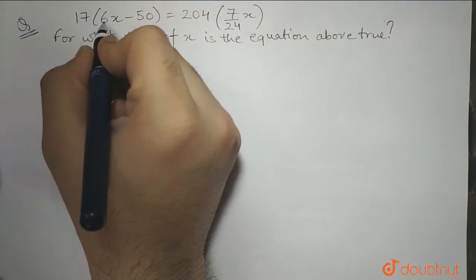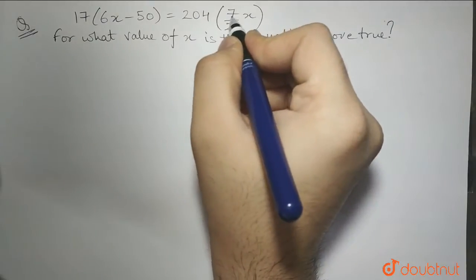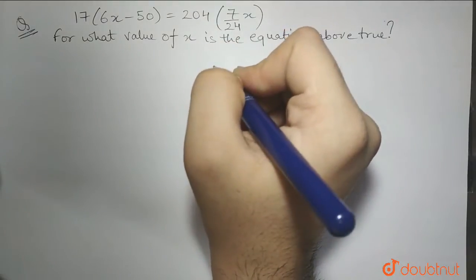So 17 times 6x minus 50 is equal to 204 times 7 by 24 of x. Okay,